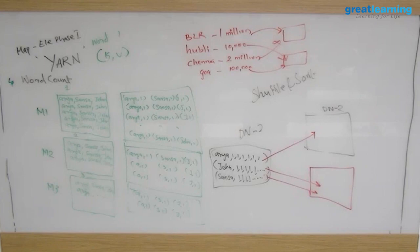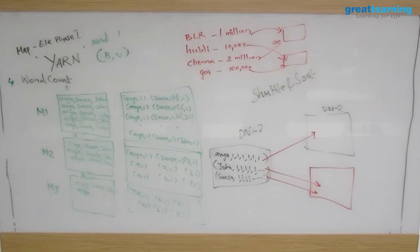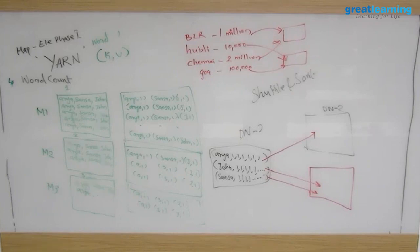That is where you write a custom partitioner — it's a Java class. Once shuffling is done, you can manually specify which key goes to which reducer. You have control over the distribution. Otherwise it shuffles automatically, some reducer gets overloaded and is slow. The hash partitioner will try, but there's no guarantee, so in production we never use it.